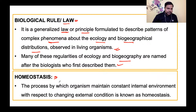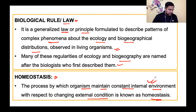एक word आता है — homeostasis। Homeostasis एक ऐसा process है जहाँ organisms maintain constant internal environment with respect to changing external conditions — इसको homeostasis कहते हैं। इसमें हम लोग homeothermic और poikilothermic terms भी पढ़ते हैं।